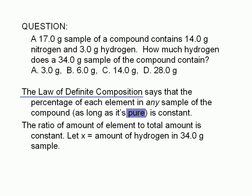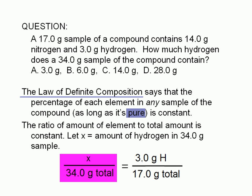Mathematically, this implies that the ratio of the amount of the element to the total amount is constant. If we let X be the amount of hydrogen in the 34.0-gram sample, the ratio of X to 34.0-grams would be equivalent to the ratio of 3.0-grams to 17.0-grams.